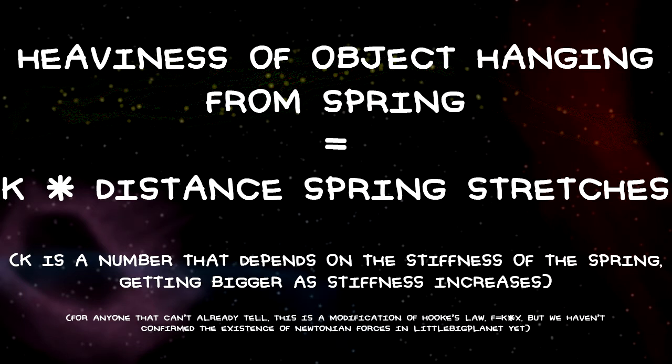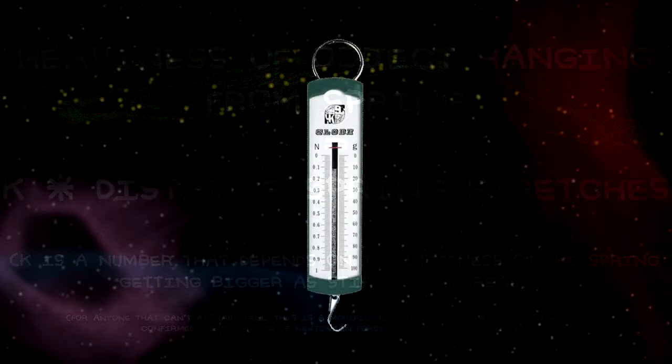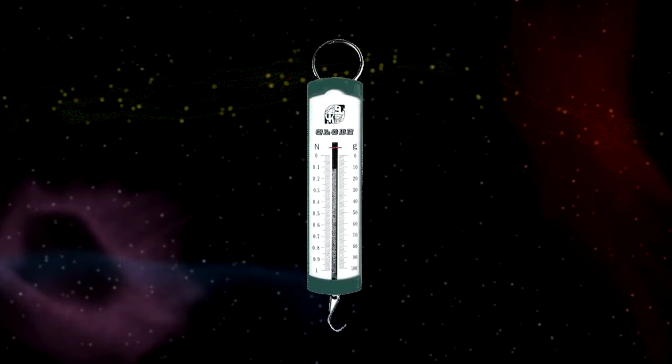Thus, if we hang something from a spring, there will be a direct proportion between the heaviness of what we hang from it and how far it stretches. All we have to do then is work out how far a weight of one unit of heaviness will make the spring stretch, and we can use that spring as a scale — a spring scale, which is a common type of scale in real life.